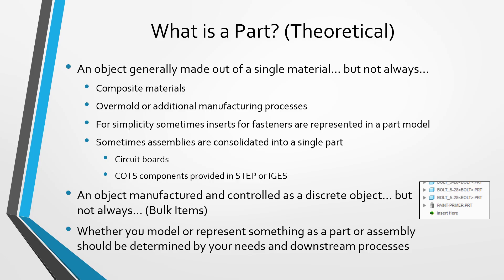Another situation is that sometimes a part model will include some of the inserts or fasteners that are included at a higher level. For simplicity, people will model the part to include the inserts for the fasteners. You might also represent assemblies as single parts. Common areas where I see this are circuit boards designed in other packages like ORCAD, then brought into Creo Parametric as a single part. You might also get COTS components from different websites and import them as a STEP or IGES file, representing a single line item in your bill of materials.